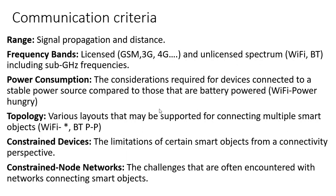Range refers to signal propagation and the distance up to which coverage is provided. Traditional Bluetooth has a range of about 10 meters; Wi-Fi theoretically up to 250 meters, practically around 100–150 meters depending on obstacles. Frequency band matters — whether a technology operates in licensed or unlicensed spectrum. In India, TRAI (Telecom Regulatory Authority of India) regulates all frequencies. Technologies like 2G, 3G, 4G, 5G operate in licensed spectrum.